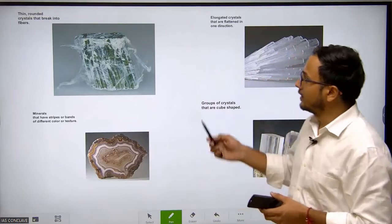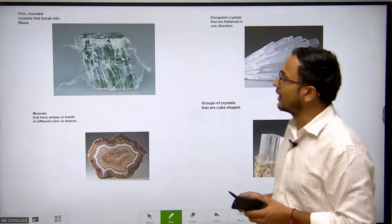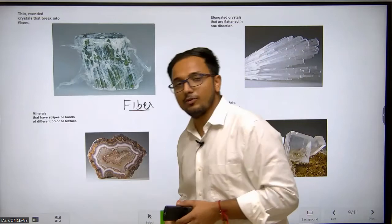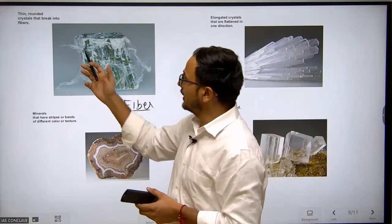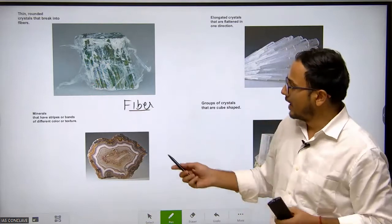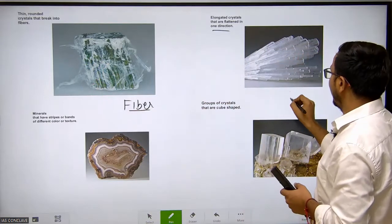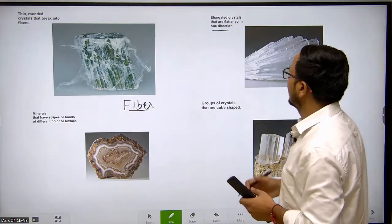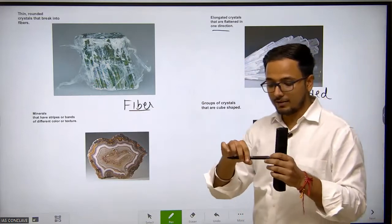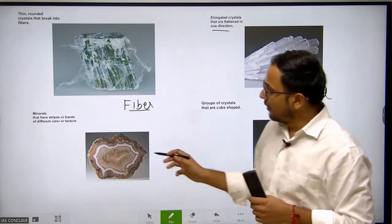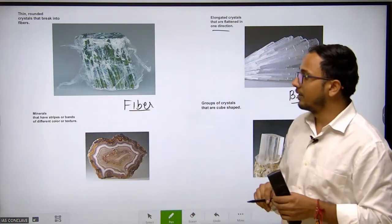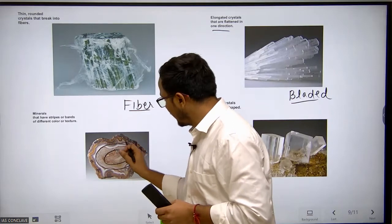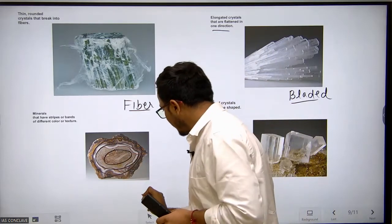Let's look here. These are different mineral crystal shapes. You can see the first one is fiber shape, like jute fiber - thin rounded crystals that break into fiber form. The second one is bladed shape - elongated crystals that are flattened in one direction, like a fan. And minerals with strips or bands of different colors - this crystal shape is called banded.